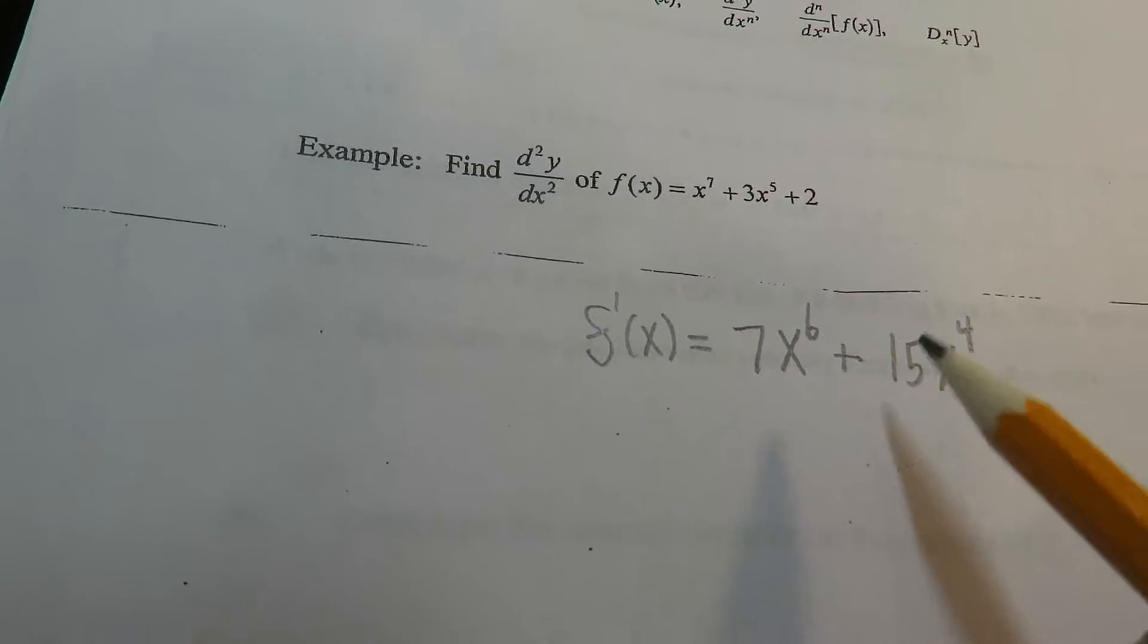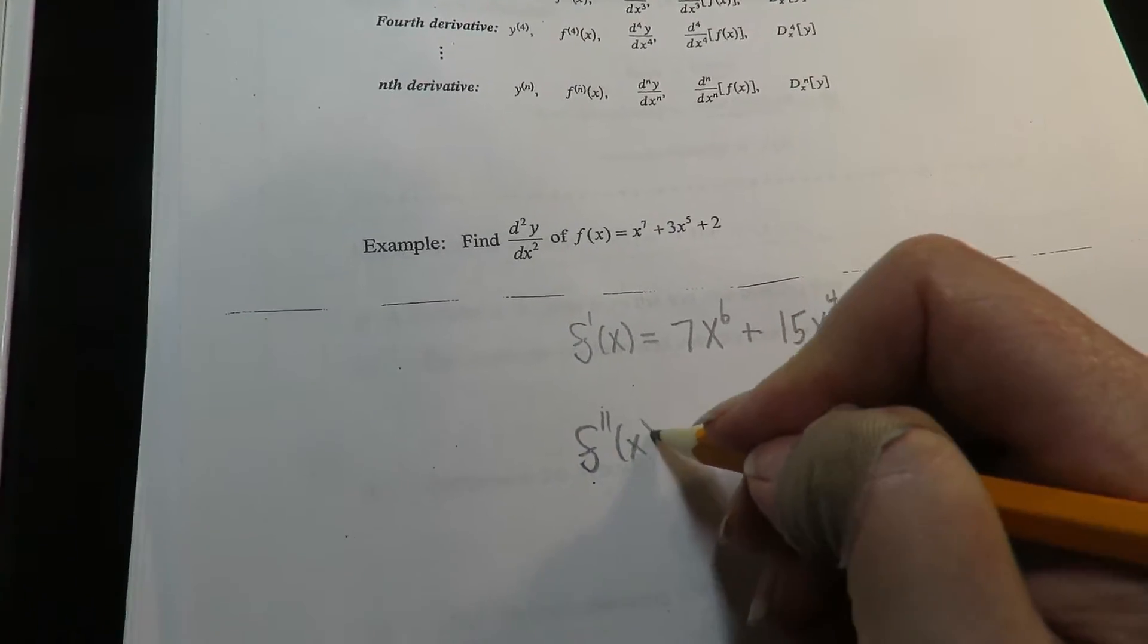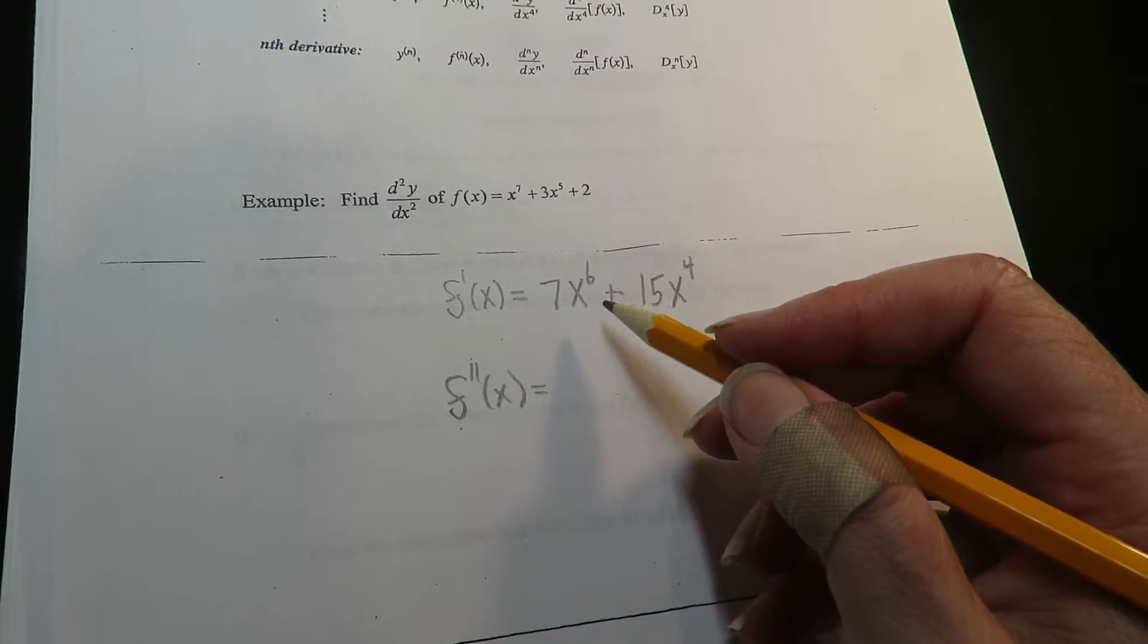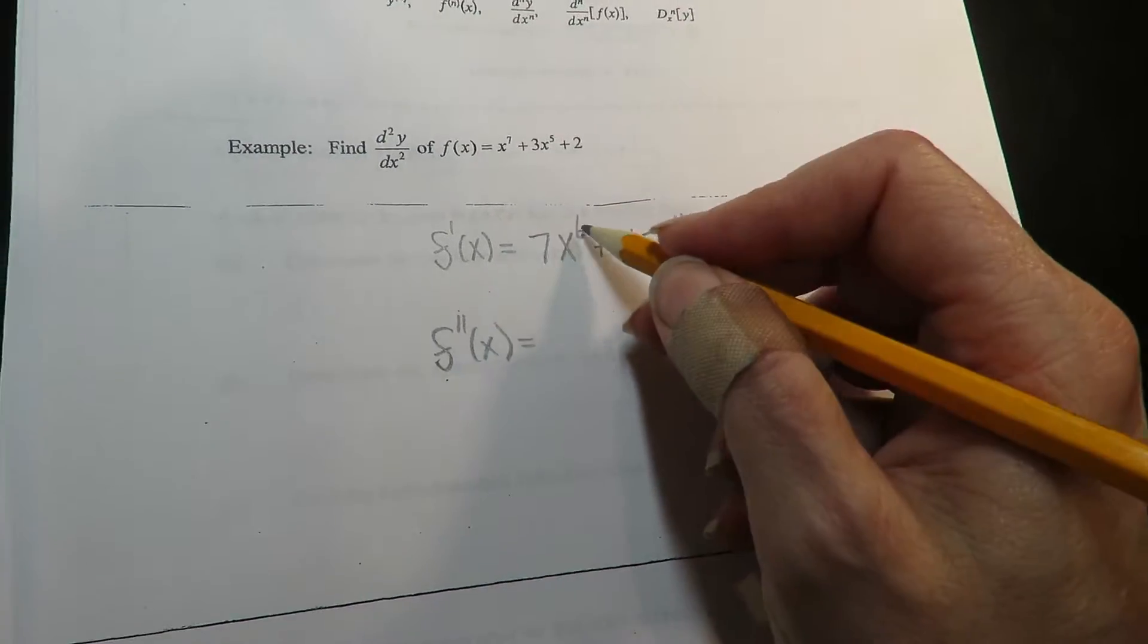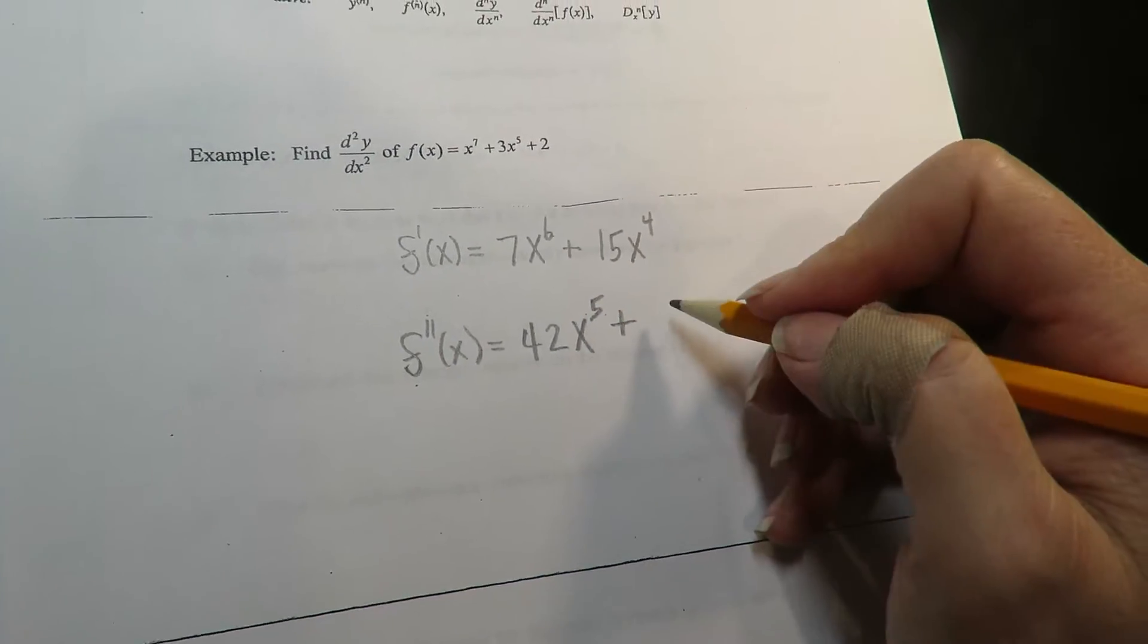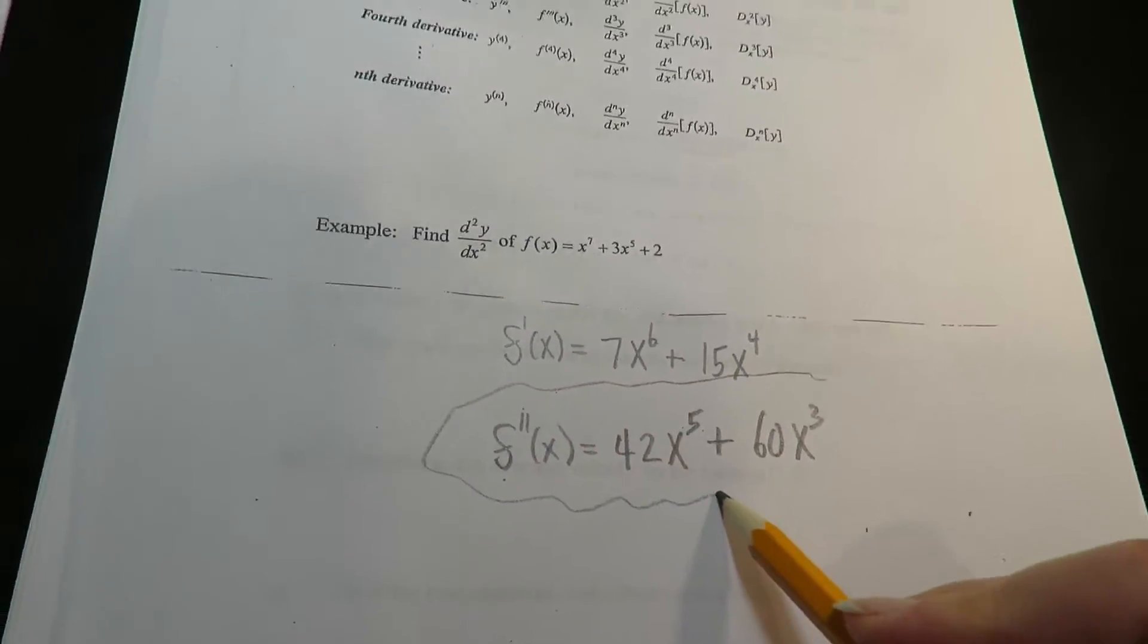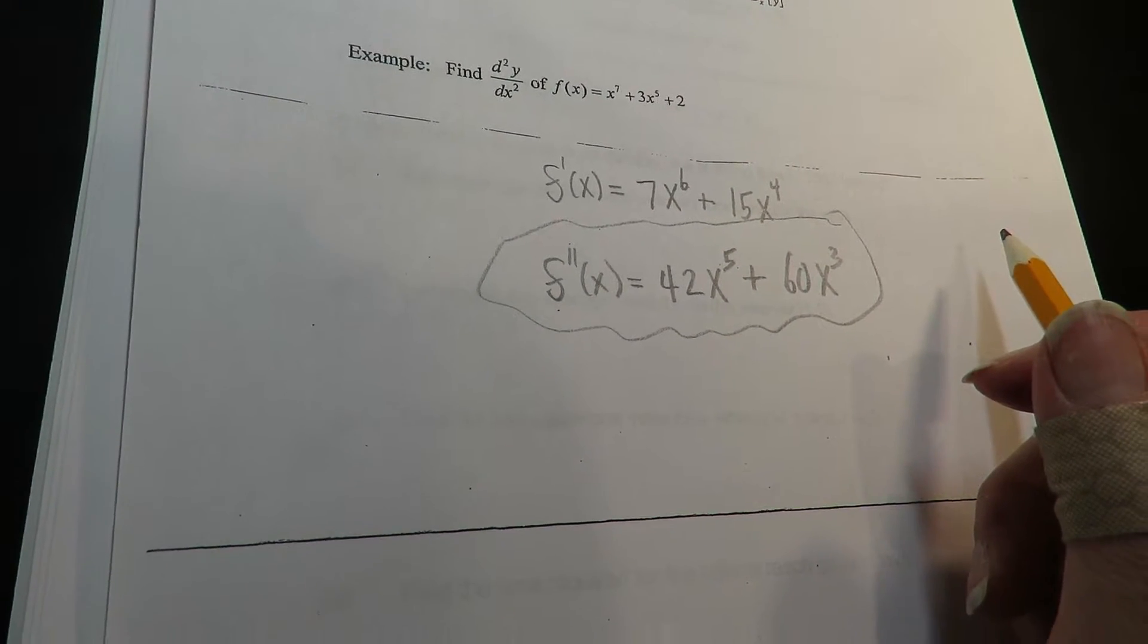Now I'm going to take the first derivative and go to the second derivative. If I needed the third derivative I would just go again. Here we go, second derivative using the power rule again: that's going to be 60x^3. That's it, that's the second derivative.